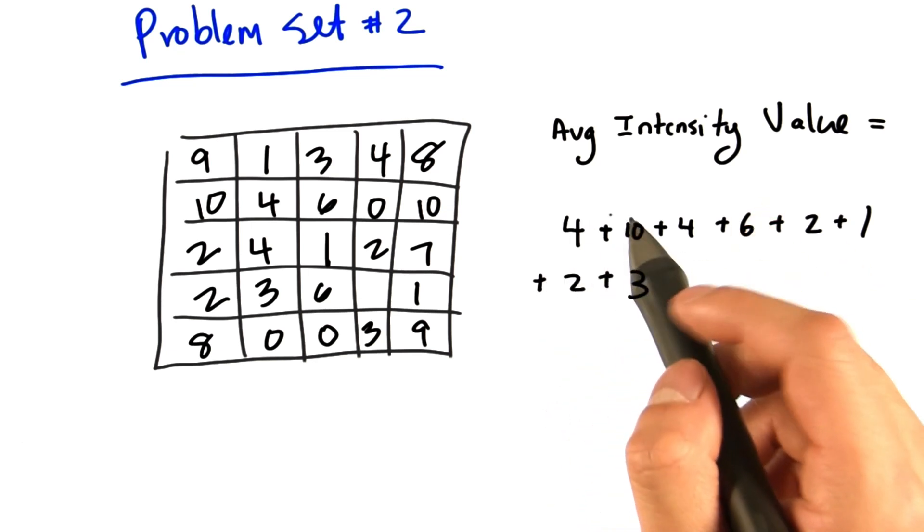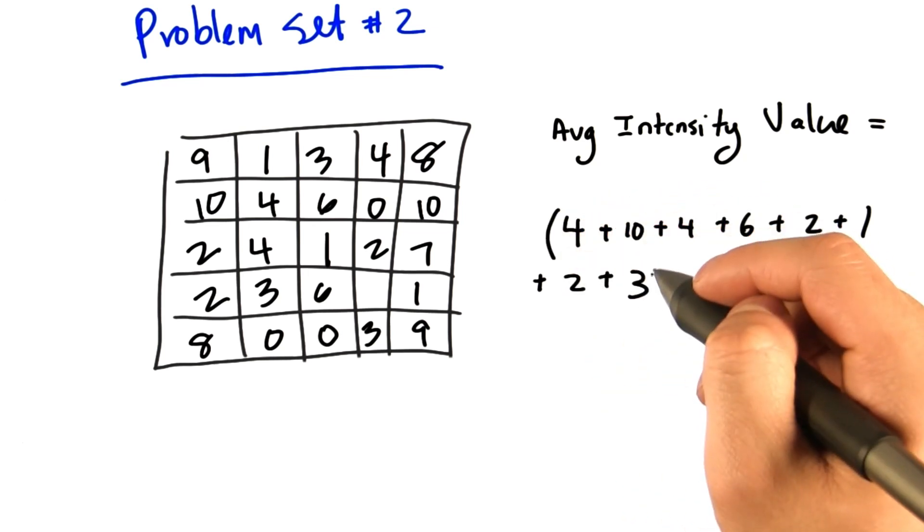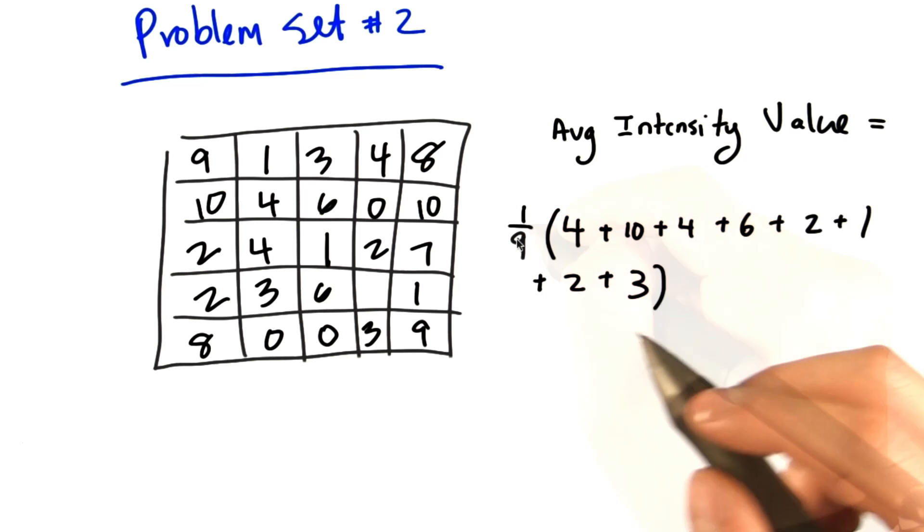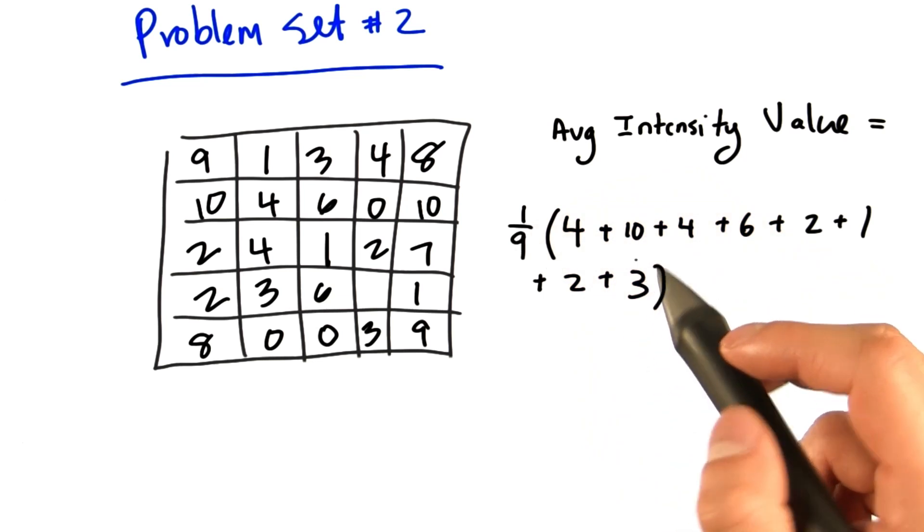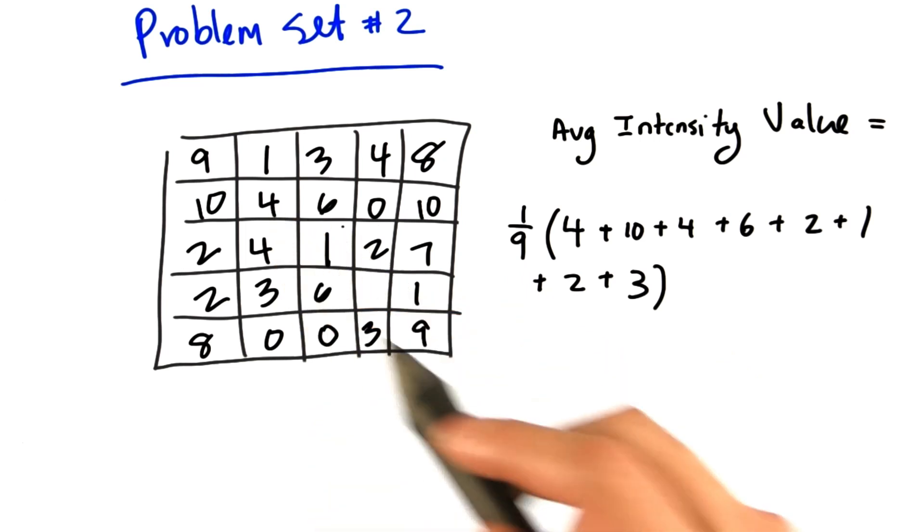And since we have nine elements, or nine pixels here, we will multiply the sum by one-ninth. And that is how you would calculate the average intensity value for a pixel in an image.